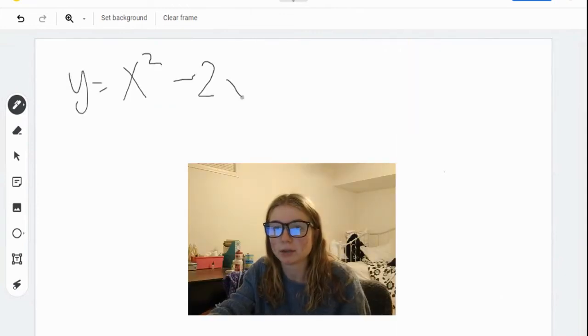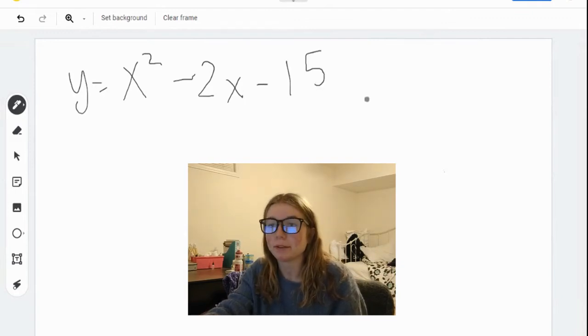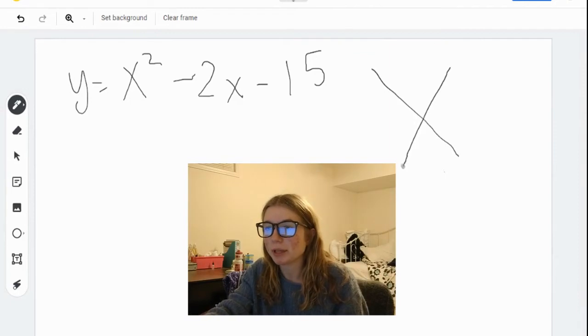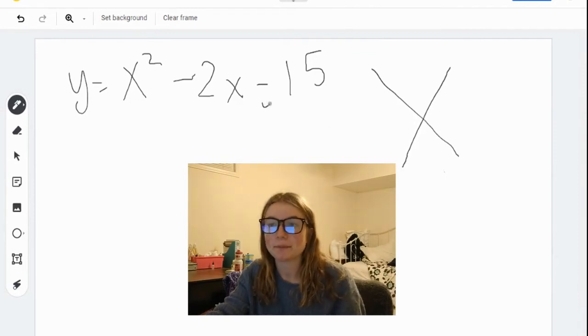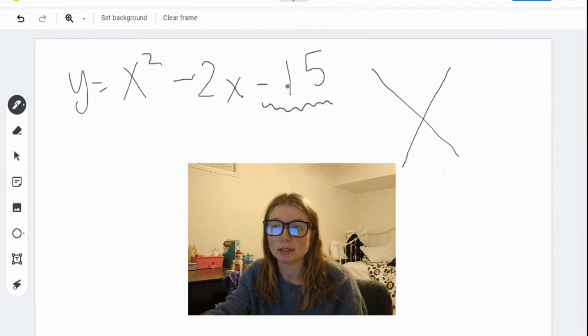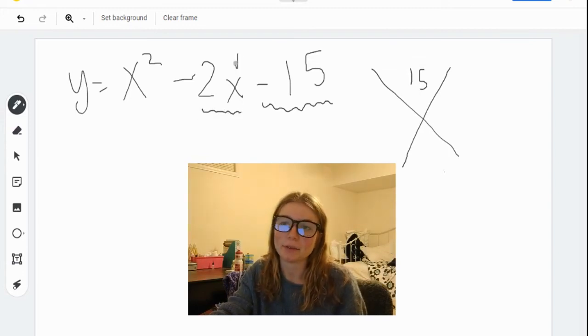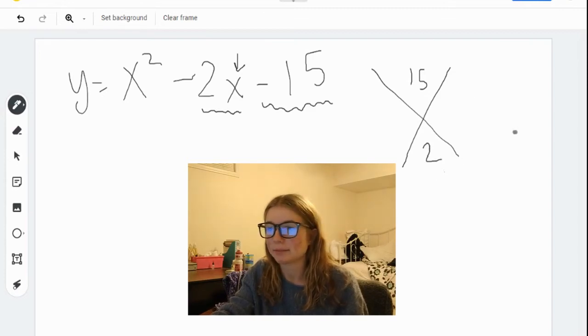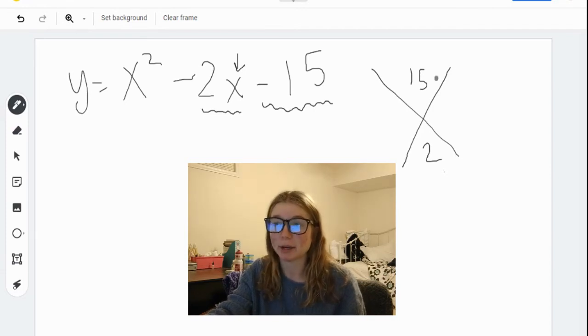So we've got y equals x squared minus 2x minus 15. Using the magic x method, you put the constant, the value that does not have an x attached to it, at the top of your x. And you put this middle value, the value with 1x, at the bottom. So your x would look like this. Now, you want to find numbers on either side that multiply to the top number and add to the bottom number.